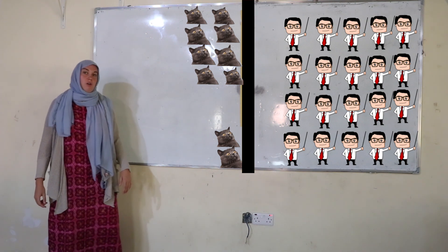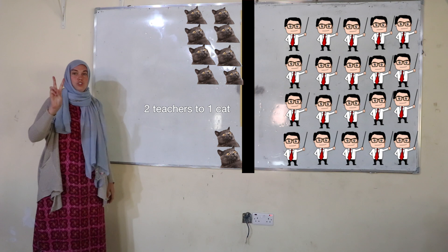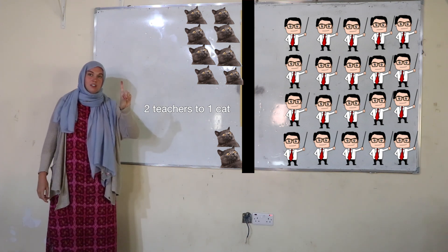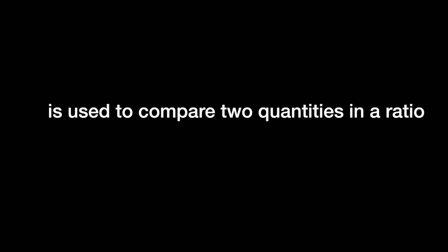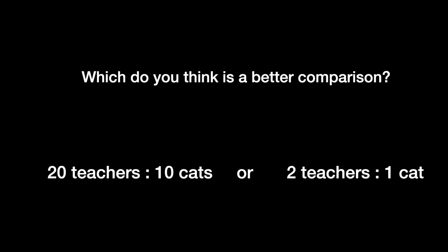You could also say there is a ratio of 2 teachers to 1 cat. For every 2 teachers, there is 1 cat. This symbol, the colon, is used to compare 2 quantities in a ratio. Which one do you think is better? 20 teachers to 10 cats, or 2 teachers to 1 cat?